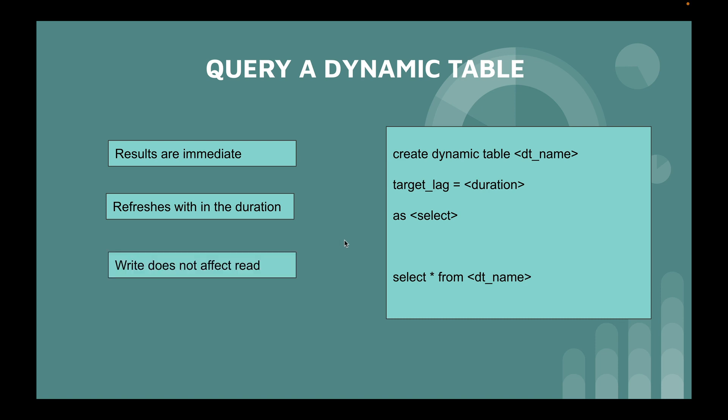Dynamic tables support snapshot isolation, meaning writes do not affect reads. When you are querying a table and it is simultaneously being updated by another process, your query results are not impacted. These tables are also very fast to query.